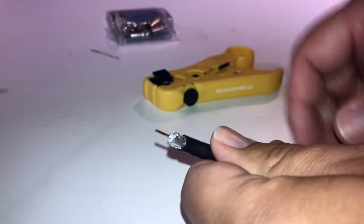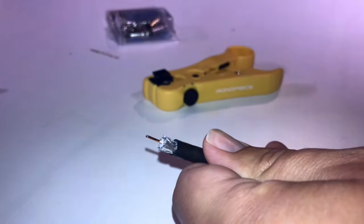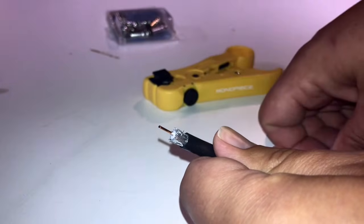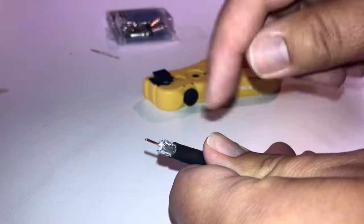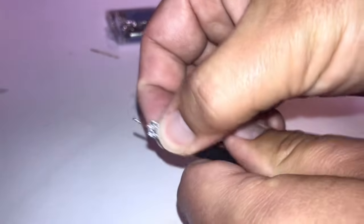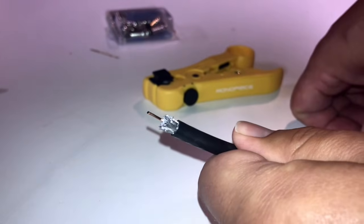Now look what we got here. We got the conductor that we really want. We got a little bit of plastic that surrounds that, an insulator. And now we've also got a shield on the outside and we've torn the plastic off. This is exactly the way we want it to look.